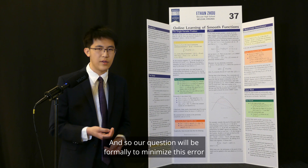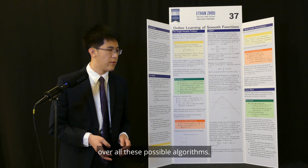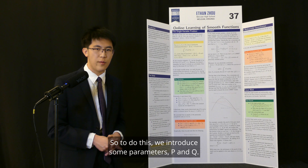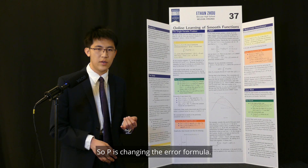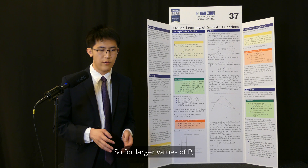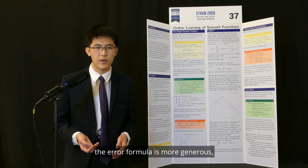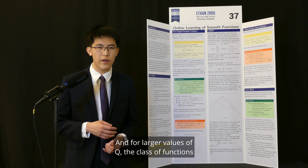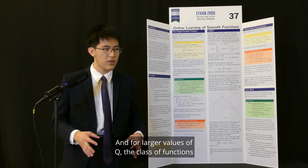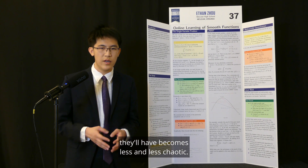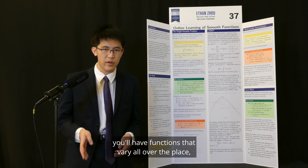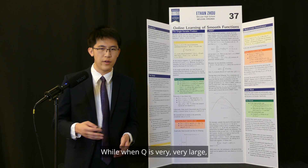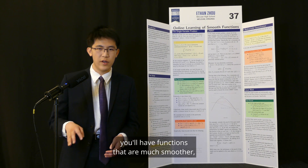To do this, we introduced some parameters p and q. So p is changing the error formula — for larger values of p, the error formula is more generous, which means that you'll have an easier time learning. And for larger values of q, the class of functions becomes less and less chaotic. So for example, when q is 1, you'll have functions that vary all over the place, and these are much more difficult to model. While when q is very large, you'll have functions that are much smoother, and these are easier to model.